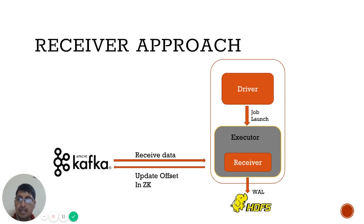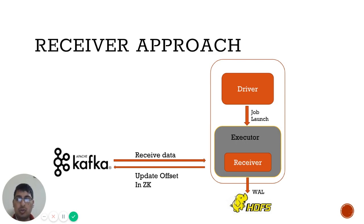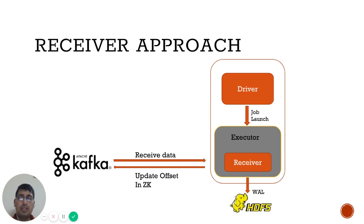Let's start with the receiver-based approach. Looking at this diagram, we have a driver which is part of our Spark application — it launches a Spark Streaming job. On an executor, a receiver is started. A receiver is a separate thread that connects with Kafka and starts receiving messages. Whatever messages it receives, it creates an RDD out of them. If you have enabled zero data loss in Spark Streaming, it also creates write-ahead logs, and those logs are stored on HDFS.